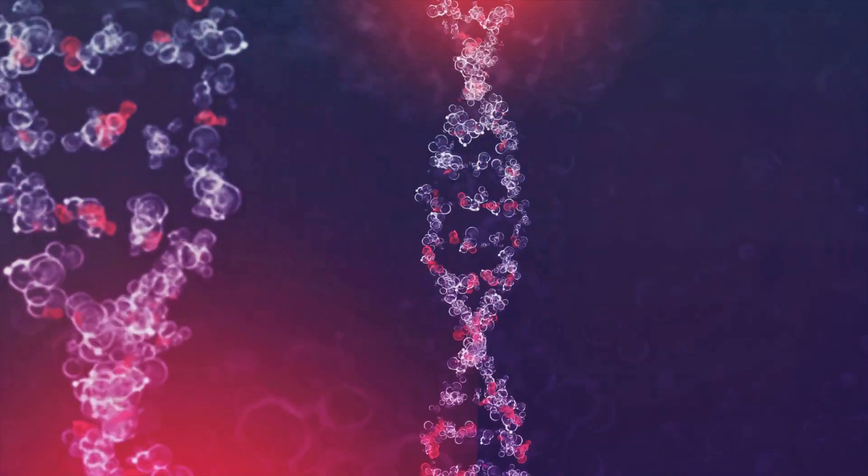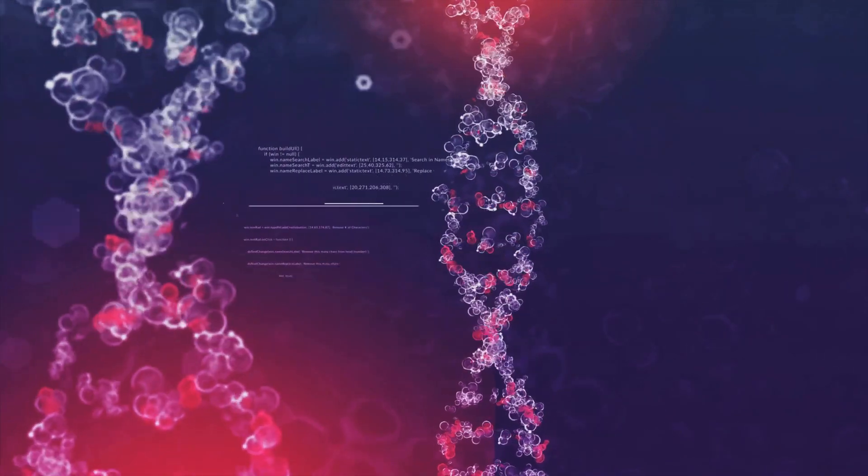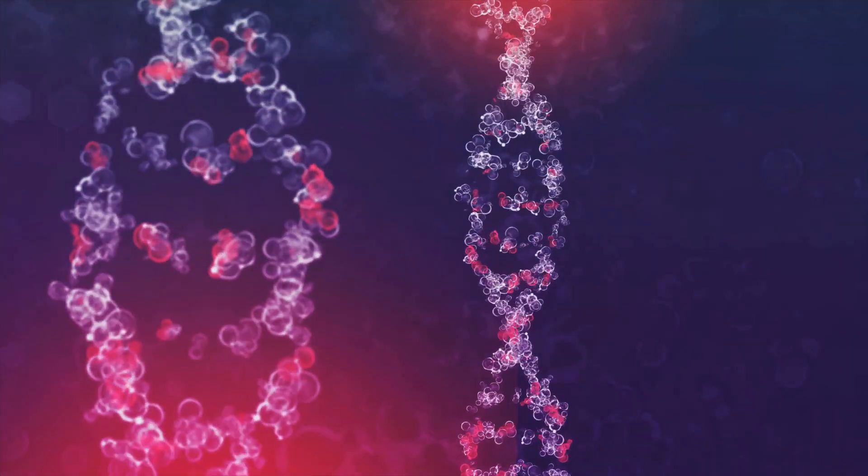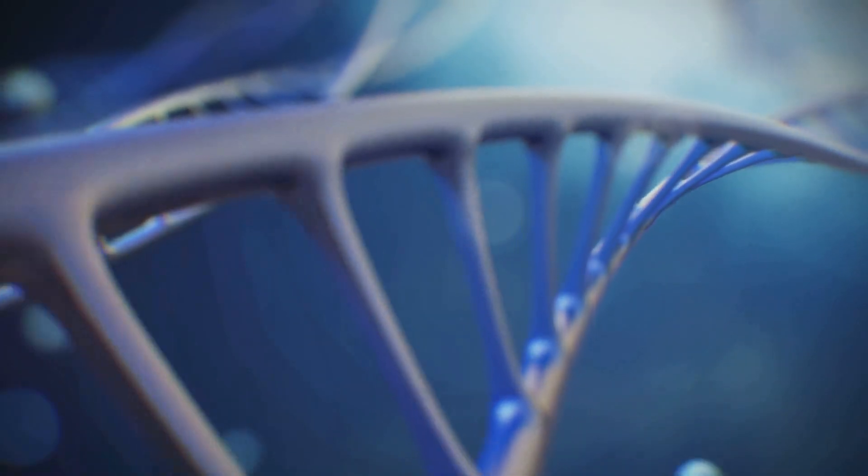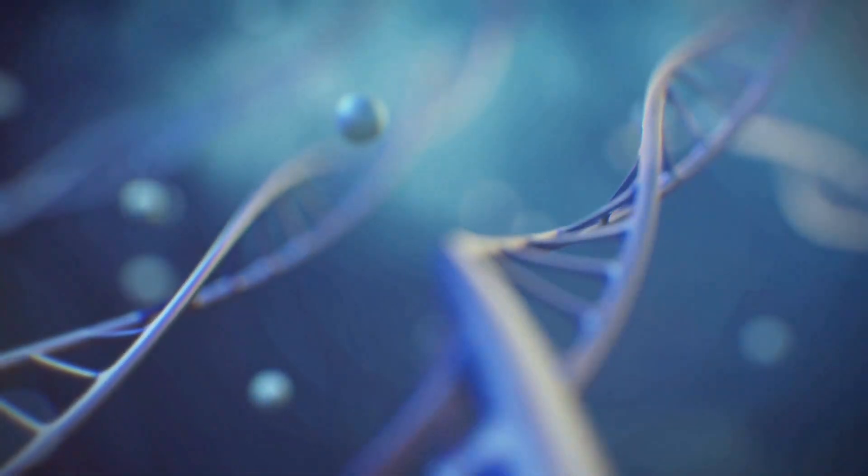Step into the world of cystic fibrosis, a genetic condition that predominantly affects the lungs but also the pancreas, liver, kidneys and intestine. It's a tale of a faulty gene, a gene that changes a protein responsible for regulating salt and water in the body. This alteration results in thick, sticky mucus that can clog the lungs and obstruct the pancreas.